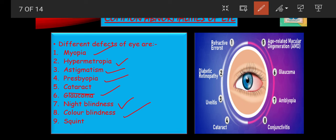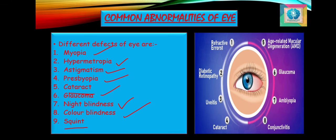The last disease to be discussed is squint. It has two main conditions: first, when the two eyes converge more than normal, leading to cross-eye; and second, when the eye diverges outwards, leading to wide eyes. Both conditions may be corrected by surgical operation and suitable exercises.